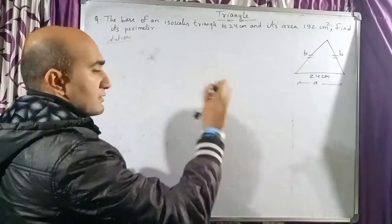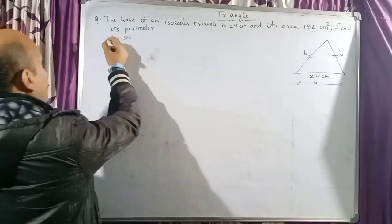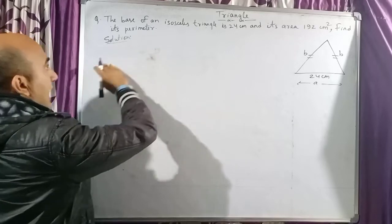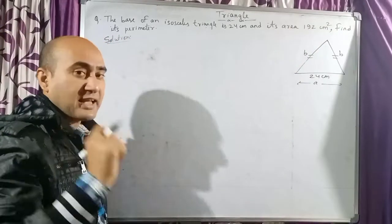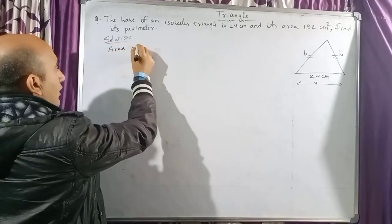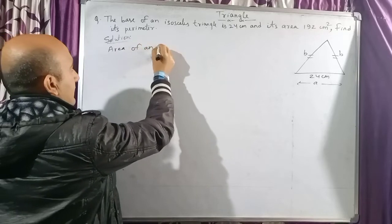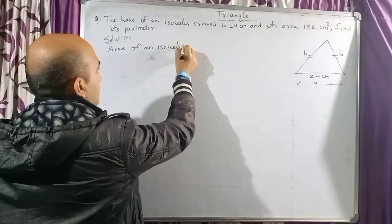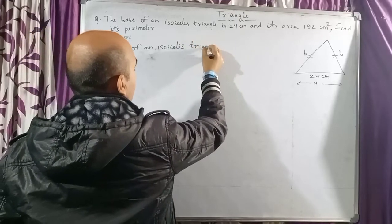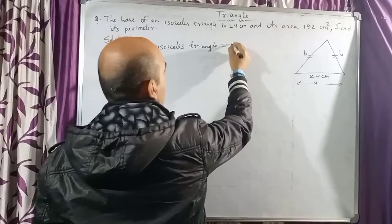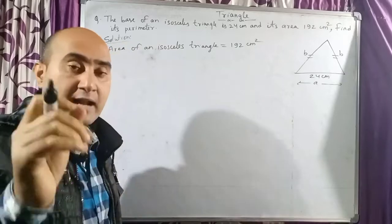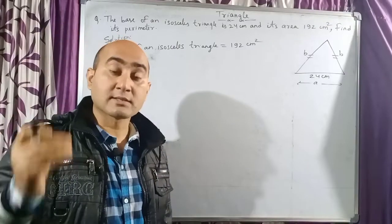So let us start the solution of the question. My solution begins here. As you all know, the value of area is given, so I can write: area of an isosceles triangle is equal to 192 square centimeters.